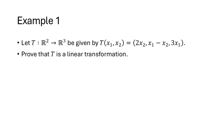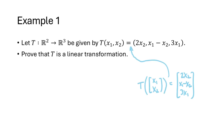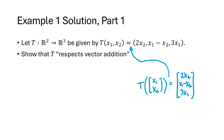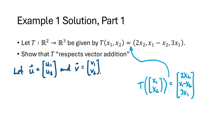Let's look at an example. We have a transformation from R2 to R3 given by T of the vector (x1, x2) equals the vector (2x2, x1 − x2, 3x1), and we want to prove that T is a linear transformation. Don't be concerned by the fact that T is written horizontally — it's the same as the vertical form, just written that way to save space. To show that T is linear, we need to show it has both respect properties, starting with T respecting vector addition: we need to show T(u + v) = T(u) + T(v) for any vectors u and v.